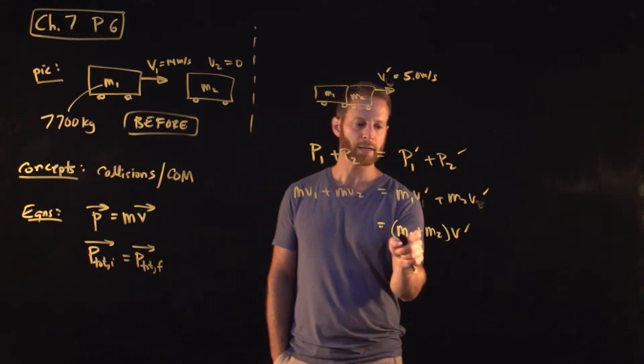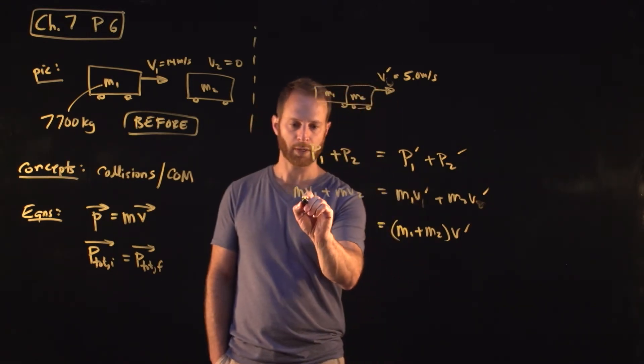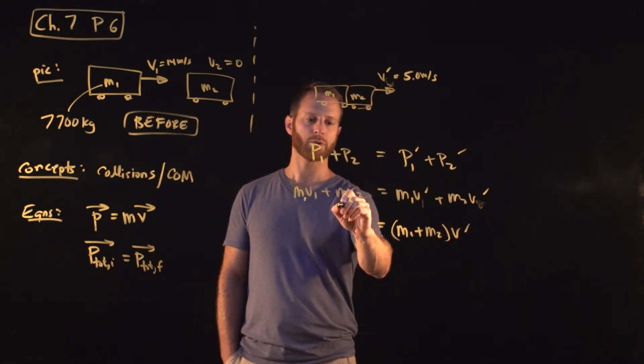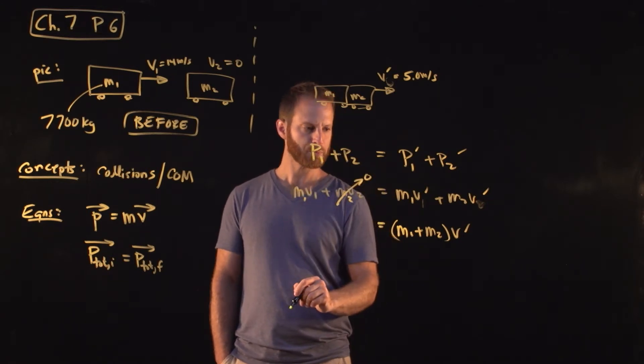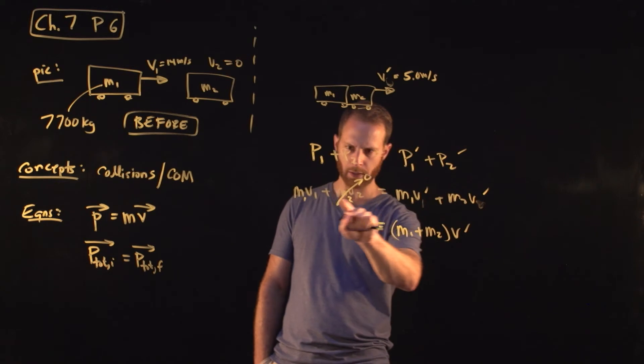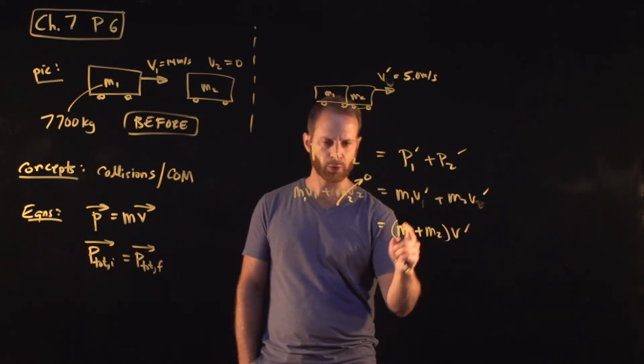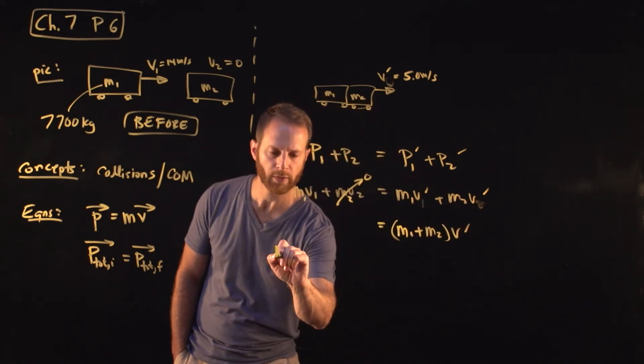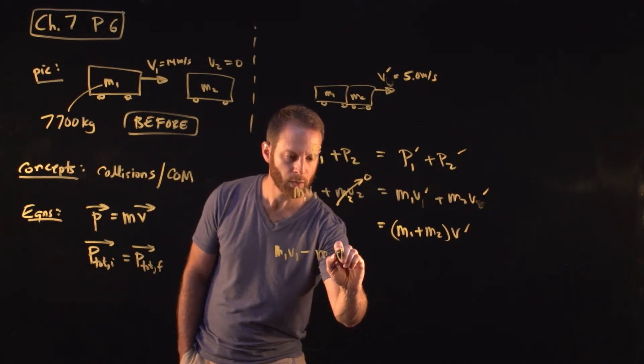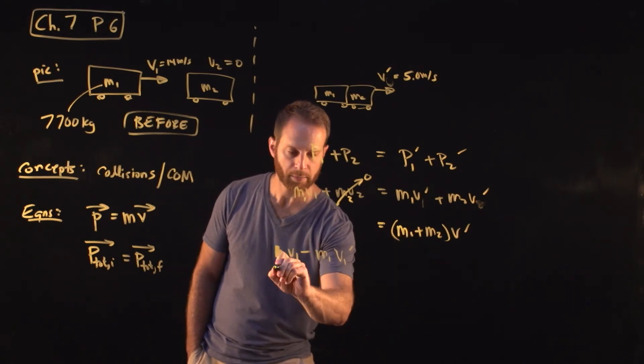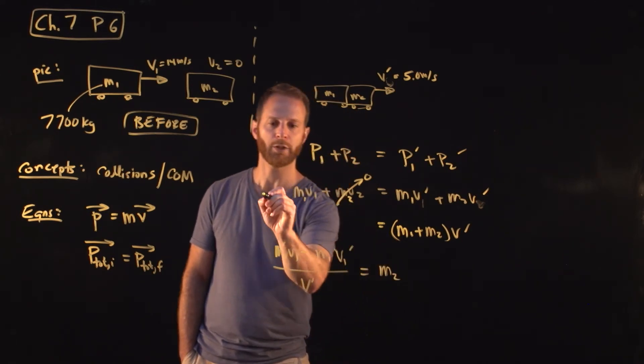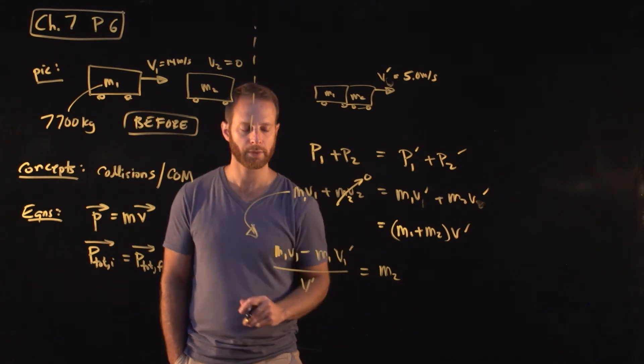In any case, we're trying to find M2, which I apparently forgot to write here. Okay. So initially, V2 is zero, so this term is not there. And so what we have, let's focus on this line here, the one unknown is M2. Let's solve for that. So we have M1V1 minus M1V prime and divide by V prime. That should be equal to M2. Again, I used this line to get there.